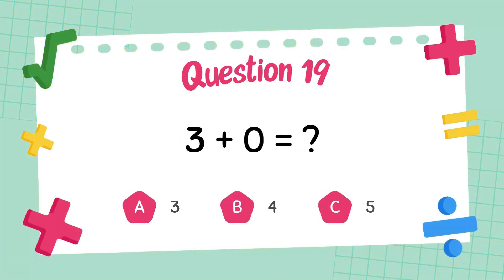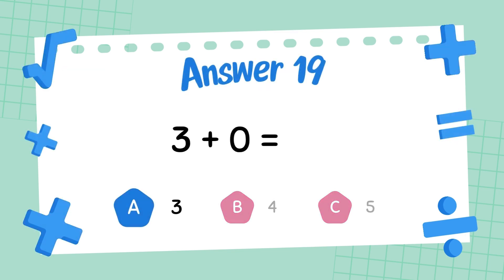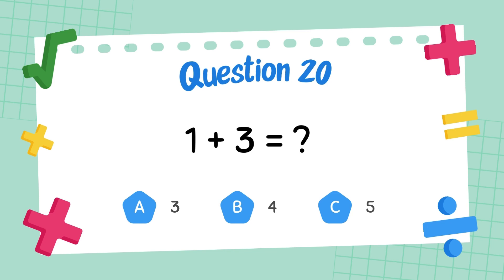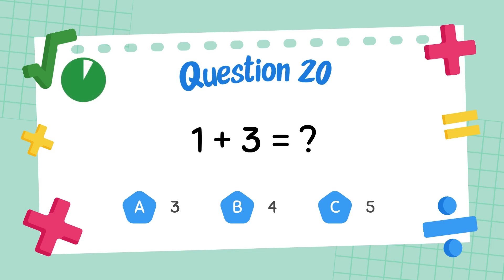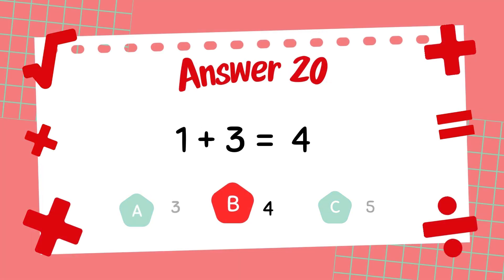What is 3 plus 0? The answer is 3. What is 1 plus 3? The answer is 4.